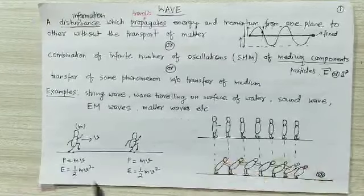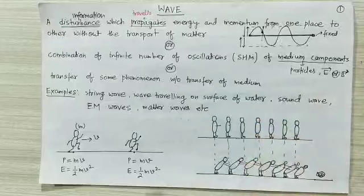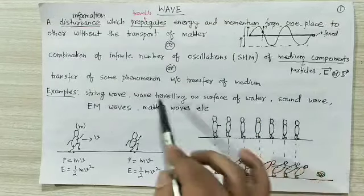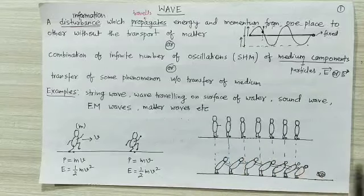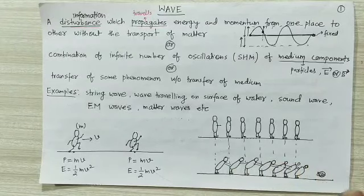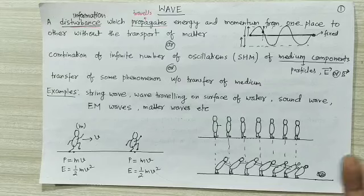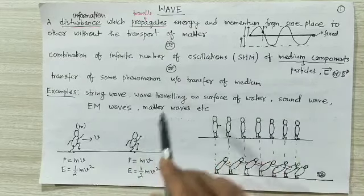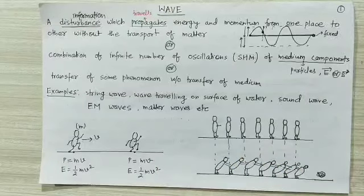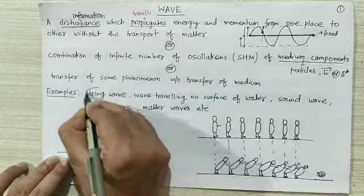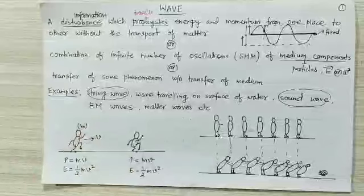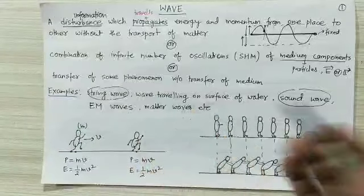Here are some examples of waves: string wave (already discussed), waves traveling on the surface of water, sound wave, electromagnetic wave, metal wave, etc. When we drop something on the surface of calm water, circular waves can be seen traveling on the surface. In class 11, we will only study string wave and sound wave. Electromagnetic wave and metal wave are topics of class 12.